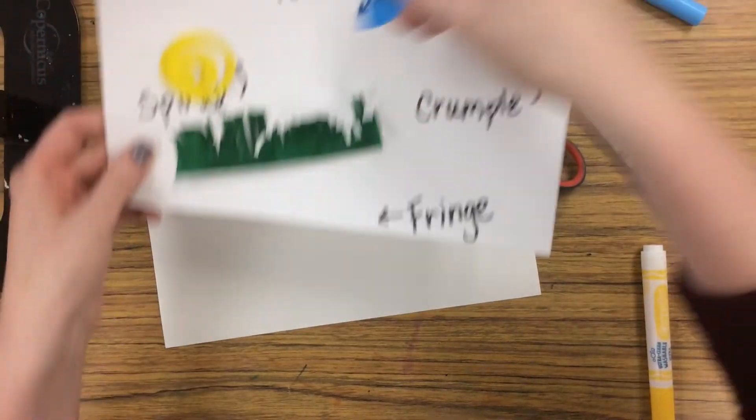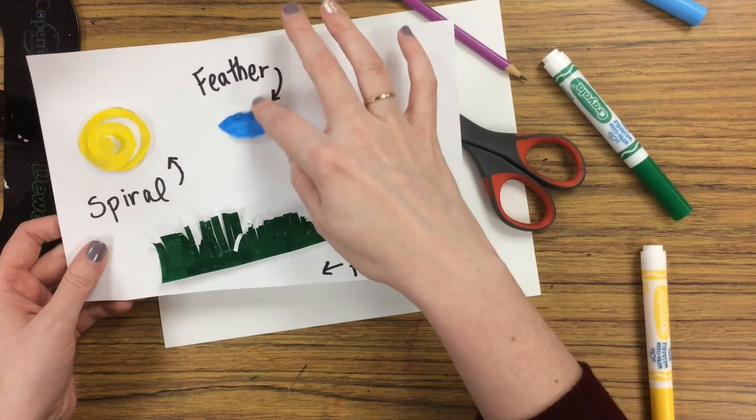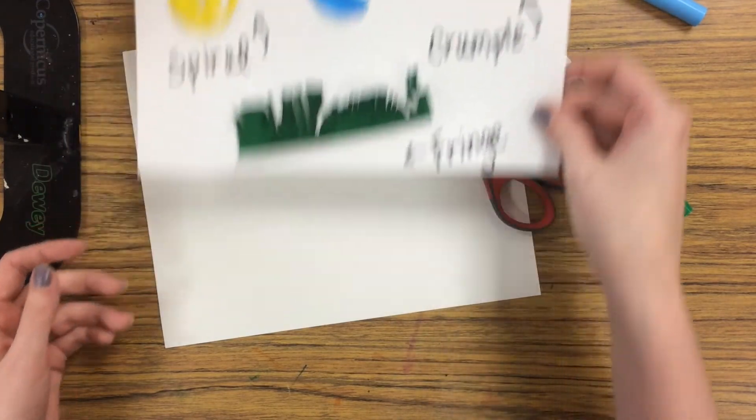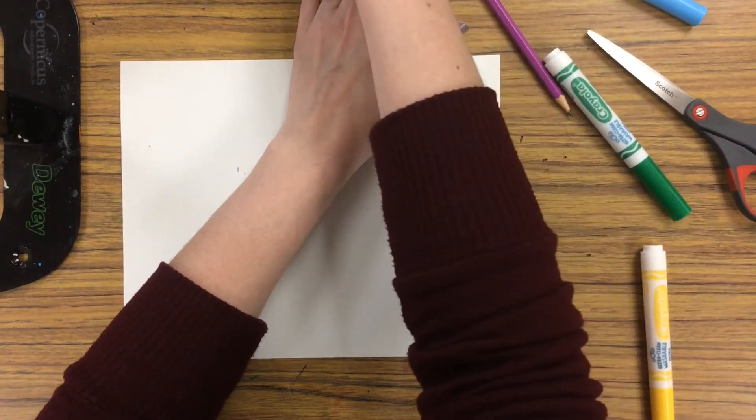So that's the feather technique. So the last thing we're gonna look at is crumpling, which you have probably done before. So I would use any little scraps that you have left over.